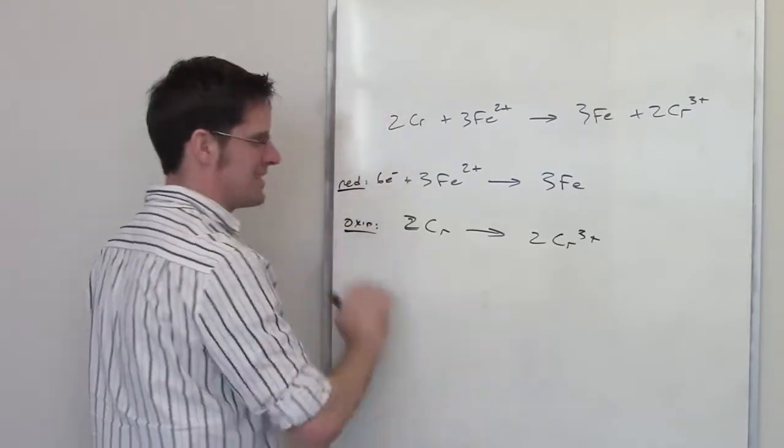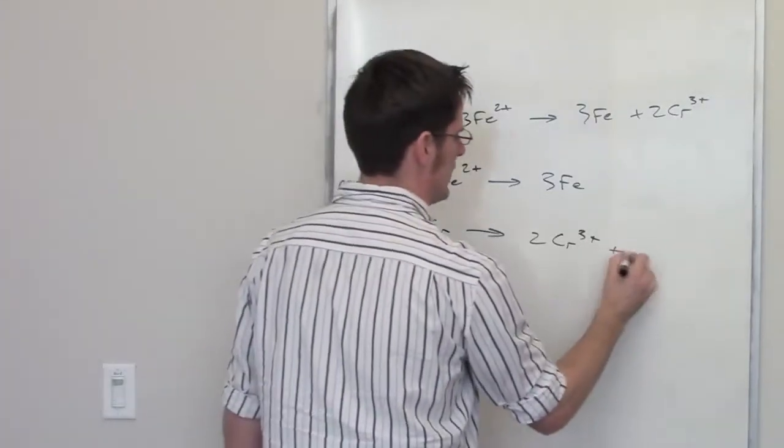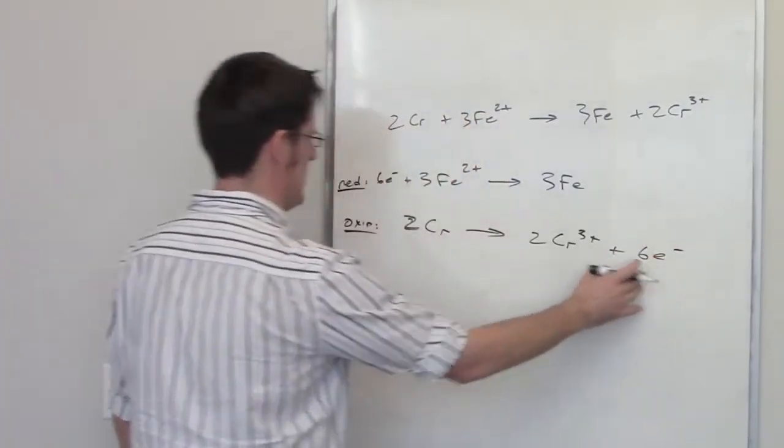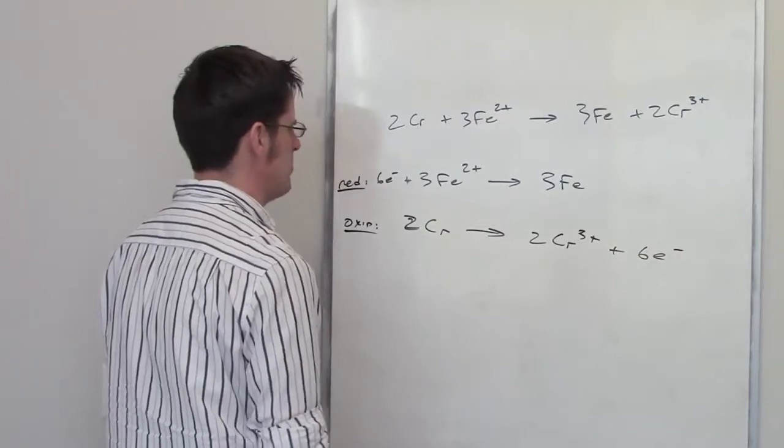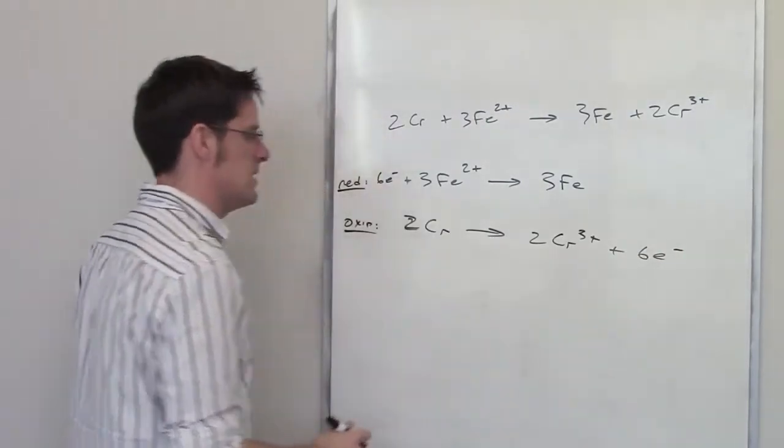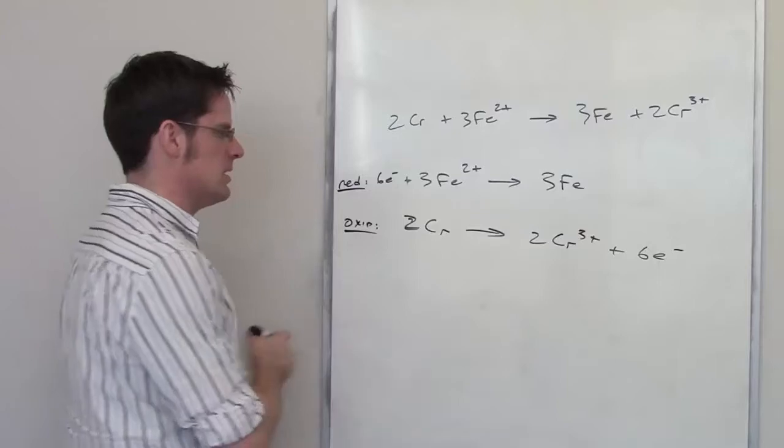Where do I throw those electrons down? Well, I'm going to have to throw them down over here. So I've got 6 electrons right there. Conveniently, I think these actually balance out at least 6 electrons in the reduction, 6 electrons in the oxidation. I think we're good to go.